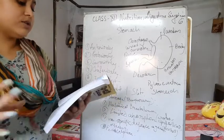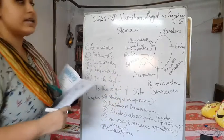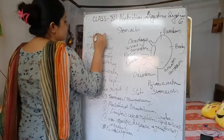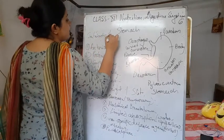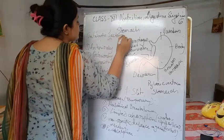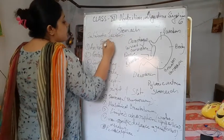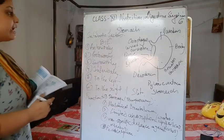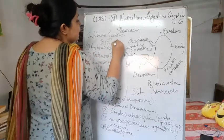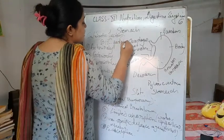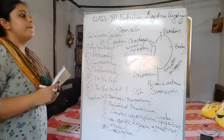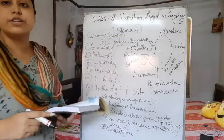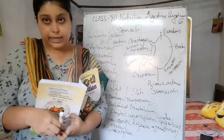There are also some intrinsic factors present. Intrinsic factors help to absorb vitamin B12, and the stomach also secretes gastrin. These are the main parts and functions of the stomach. In the next video, we will discuss the small intestine. Thank you.